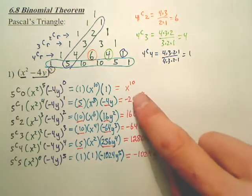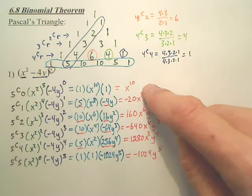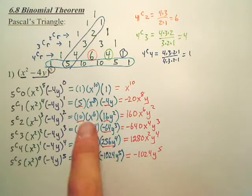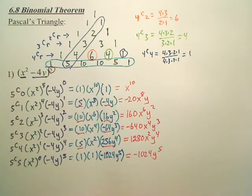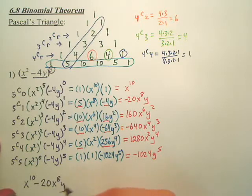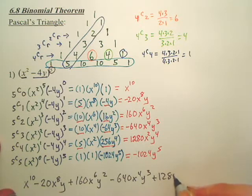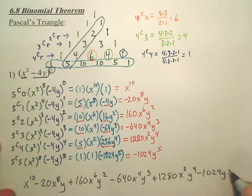Can you see a pattern in the x's and y's? The x exponents go 10, 8, 6, 4, 2, then gone. The y exponents go 0, 1, 2, 3, 4, 5. That's your answer: x to the tenth minus 20x to the eighth y plus 160x to the sixth y squared minus 640x to the fourth y to the third plus 1,280x squared y to the fourth minus 1,024y to the fifth.